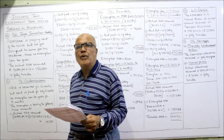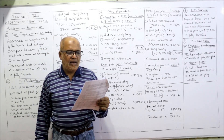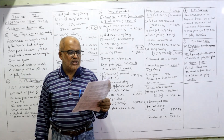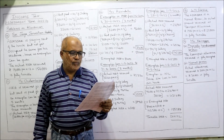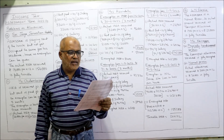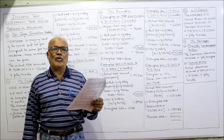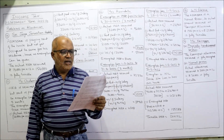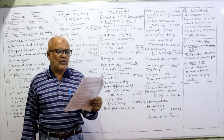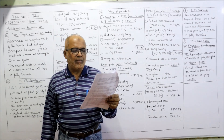Now the 12th problem. From the following particulars, compute the taxable HRA of Mrs. Arundhati, who is working in Indore city in a limited company — another town. Her salary income particulars per month: basic pay ₹42,000, DA ₹16,000, HRA ₹32,000, rent paid by her ₹7,000 per month. She is living in a rented house, so HRA exemption is allowed.